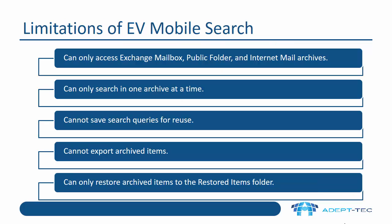There are a number of limitations of EV mobile search. You can only access exchange mailbox, public folder and internet mail archives. You can only search in one archive at a time. You cannot save search queries for reuse. It cannot export archived items. And you can only restore archived items to the restored items folder in the user's mailbox.